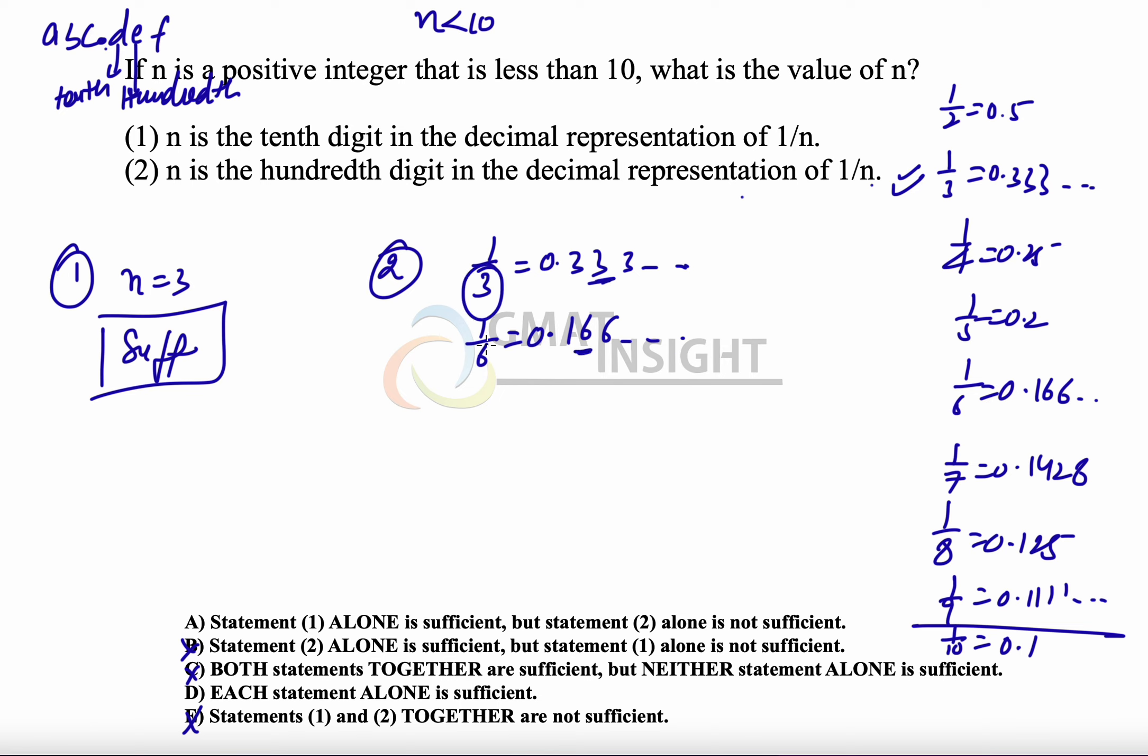Since we are confused whether n is 3 or 6, therefore, we say that the second statement alone is not sufficient. And because first is sufficient but second is not, therefore, the answer to the question becomes option A. Thank you.